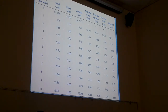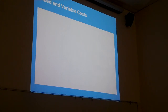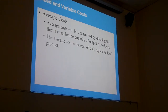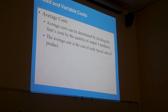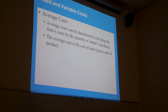Now we're getting into the variable costs, and this is what tells us where we should produce. Average cost — you have average fixed, average variable, average total cost. All you have to do to get the average cost is take the number of units of output and divide that into whatever cost you're talking about.